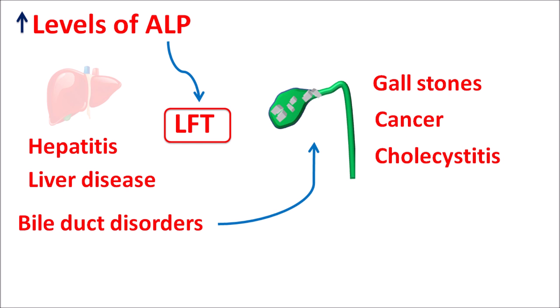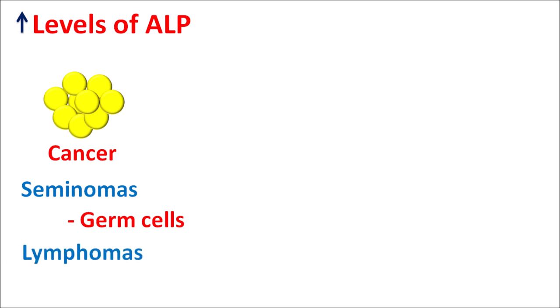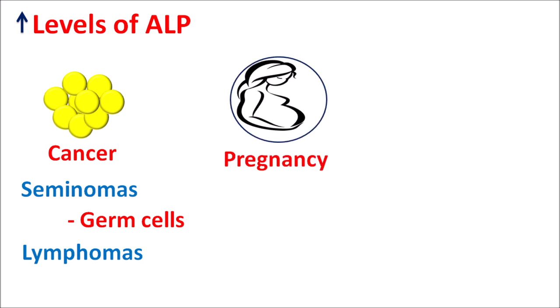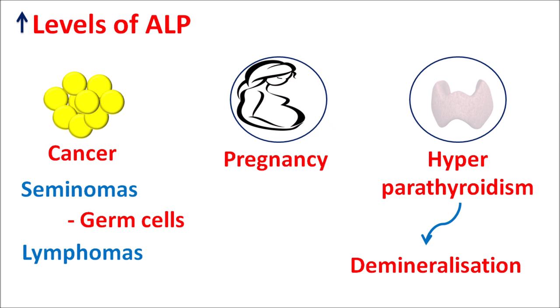ALP testing is required in conditions of any bone disorder or liver disorder. Other conditions such as cancer — particularly seminomas affecting germ cells in men, or lymphomas affecting the lymphatic system — may also cause elevation of ALP levels. Pregnancy can also elevate ALP levels. Hyperparathyroidism, where parathyroid hormone levels are elevated resulting in demineralization, also leads to elevated ALP levels.